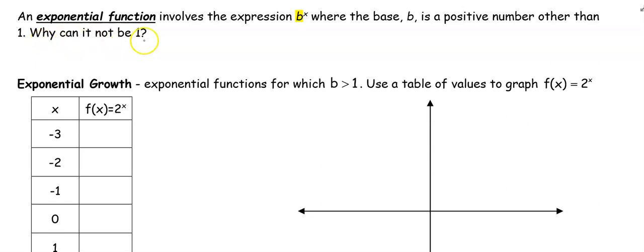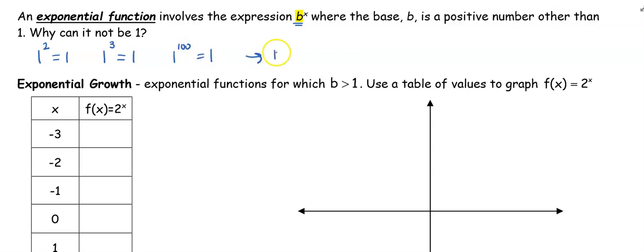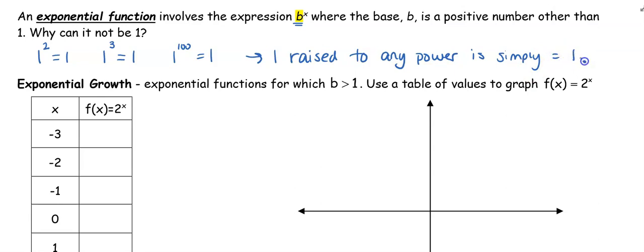It can't be one. Why can't it be one? If we're talking about what the base is — if I have a base of one and I raise it to the second power, one squared is one. One cubed is still one. No matter if I raise it to the 100th power, any number one raised to any power is simply equal to one. So if my base is one, regardless of what my exponent is, I'm always going to get a value of one, which isn't helpful. That's why our base can't be one.